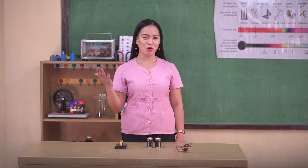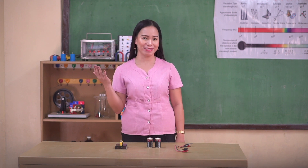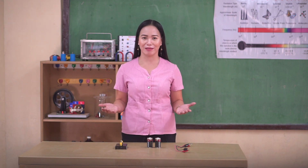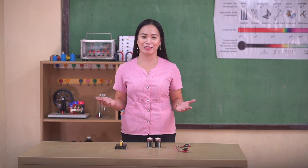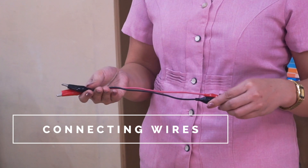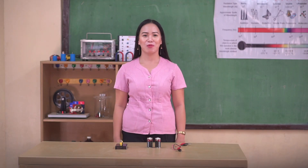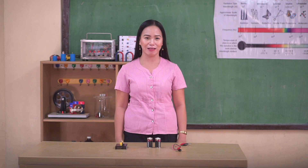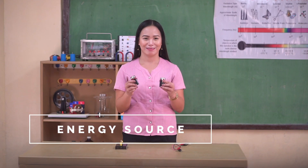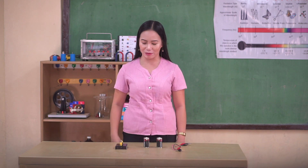Can you still remember the different components of a simple circuit? A simple circuit consists of connecting wires, a source of energy which can be a battery or dry cell to move charges, and a load such as a bulb.